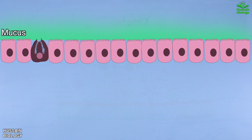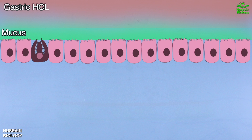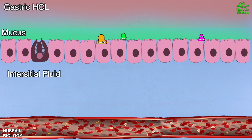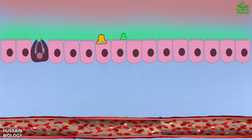We have the gastric acid secretion present above the mucus layer shown in the diagram. On the epithelial cells we have shown some factors like Lewis X and Lewis B, and TLR molecules. Beneath the epithelial layer we have the interstitial fluid followed by blood capillaries.